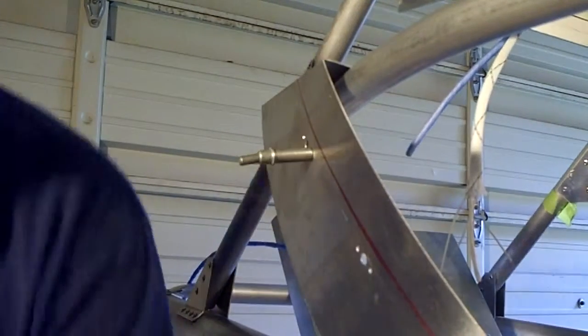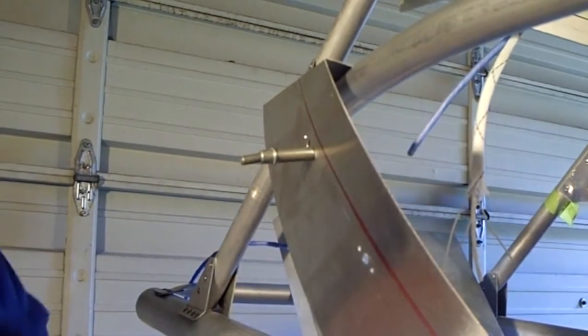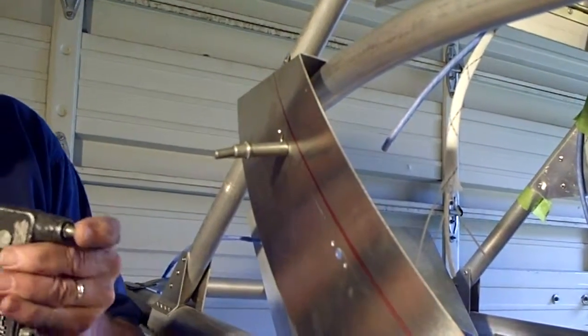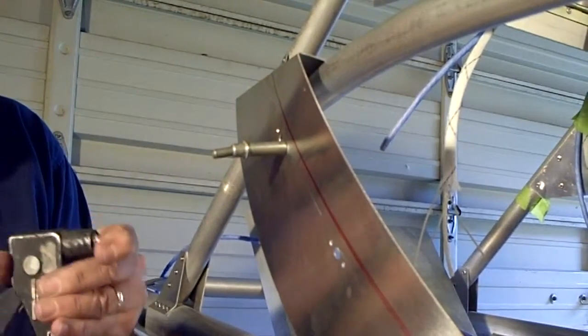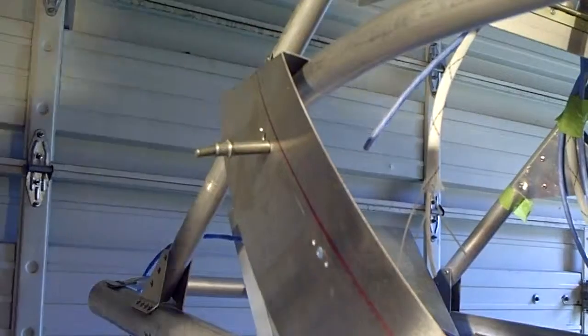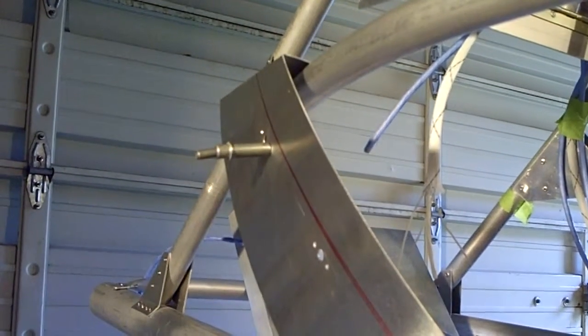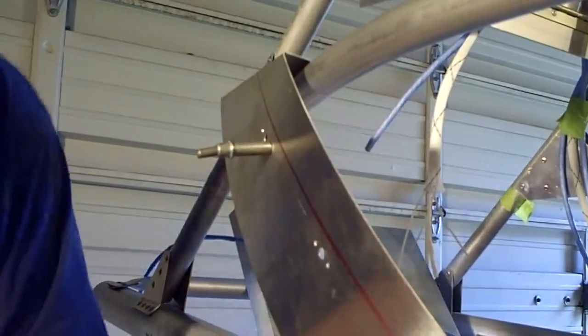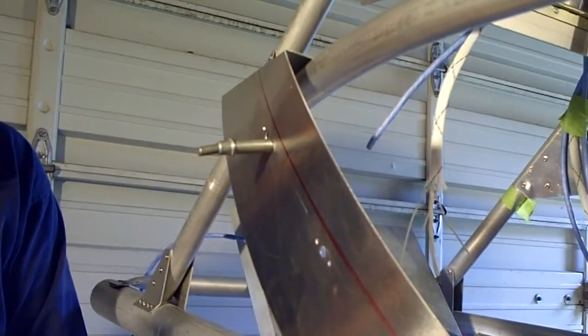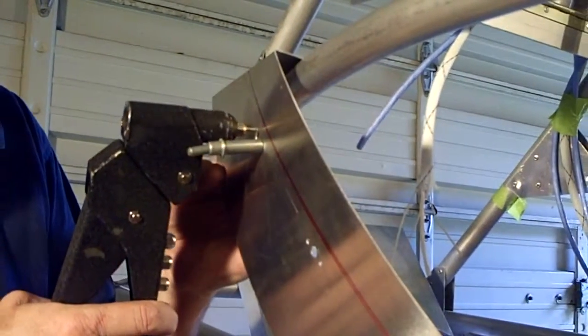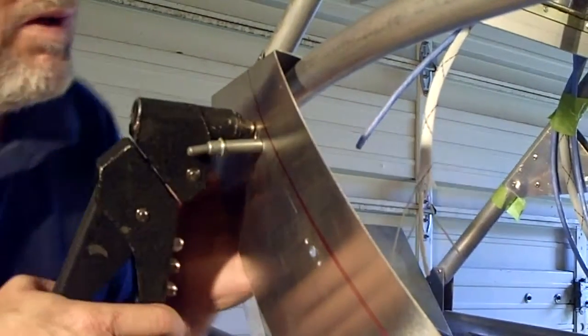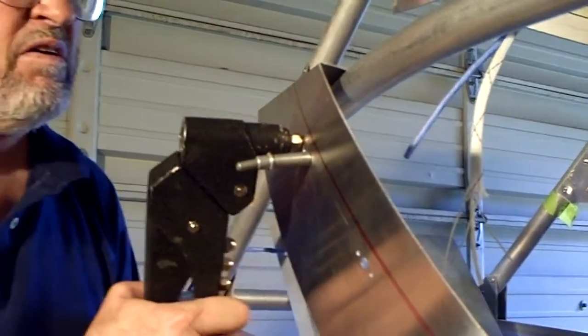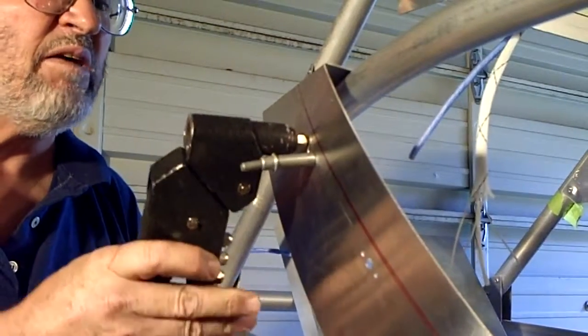That will hold that in place while you take and rivet the nut place into place. Go ahead and put my rivet in here. My tool is getting worn out. It's got about 20 some odd years of service under its belt and it's really starting to get bad on me. You might want to just take a look and make sure you've got the hole through the nut plate. I've done that before of driving rivets and then realized that I'd missed the hole there.